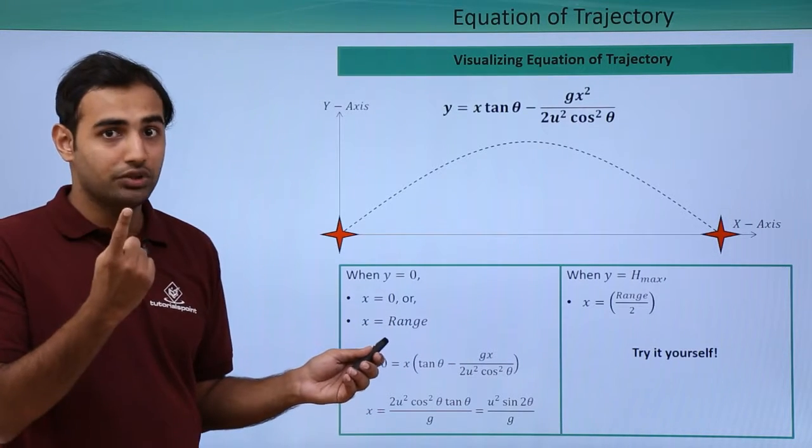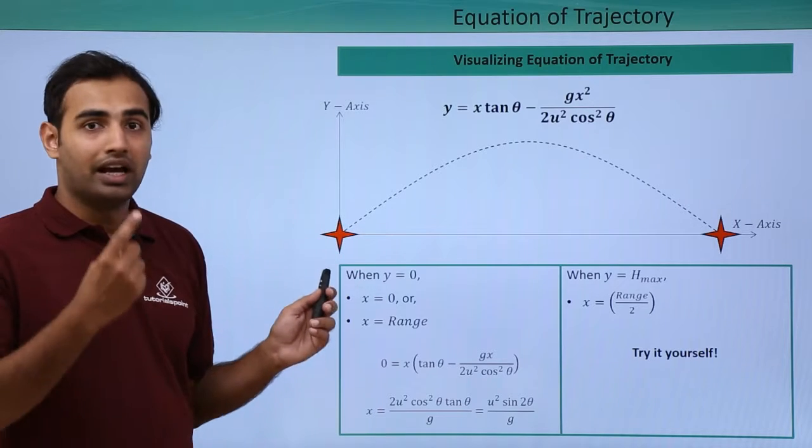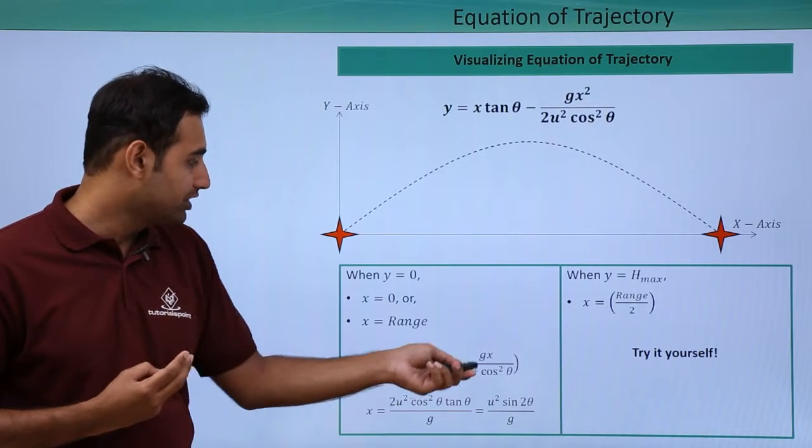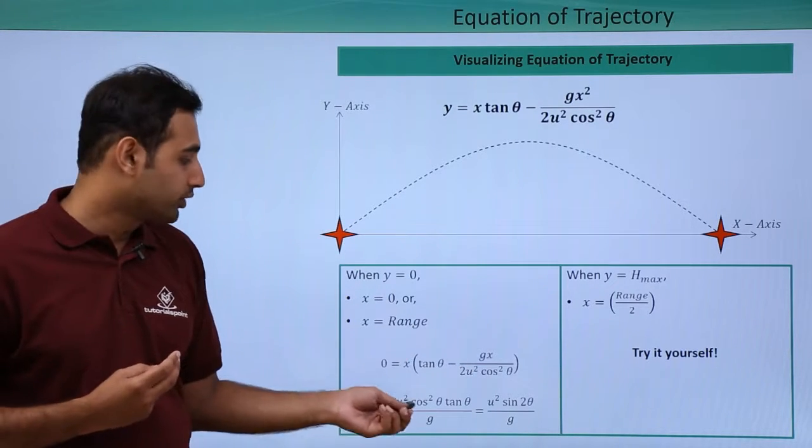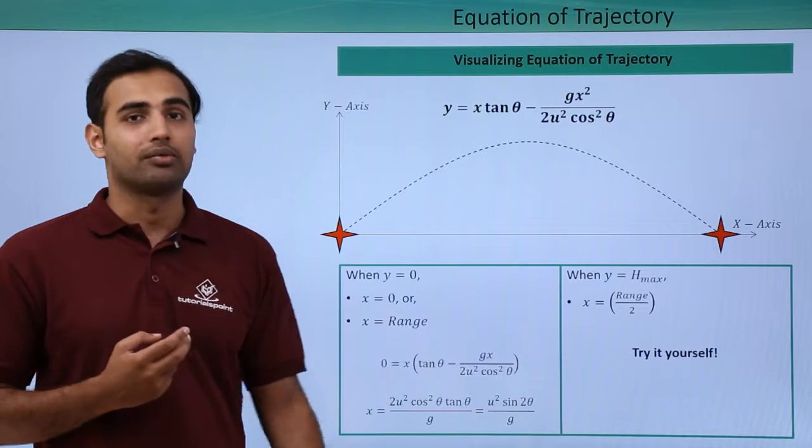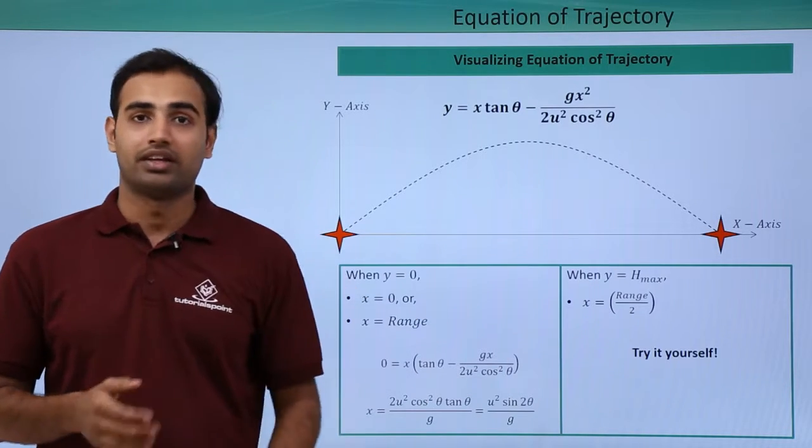So x is equal to 0, one solution is already obtained, which is this point. And the second point will be when I solve this entire expression equal to 0, which comes out to be u square sine 2 theta by g, which is also our range. It's very straightforward.